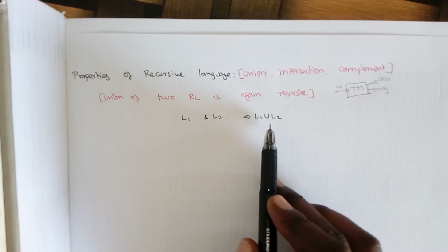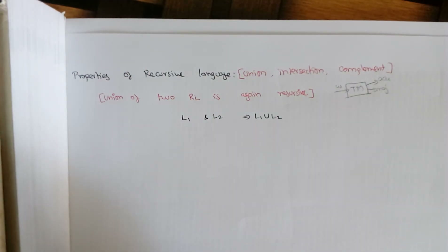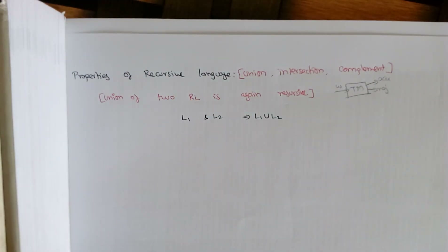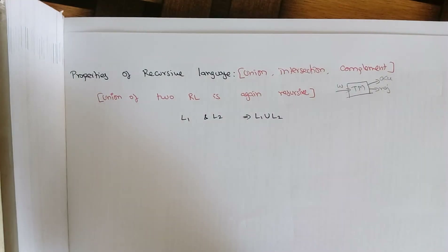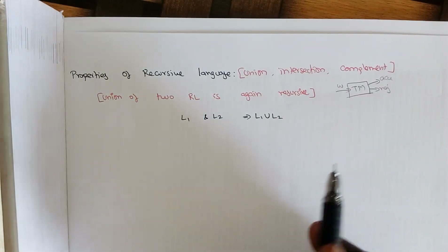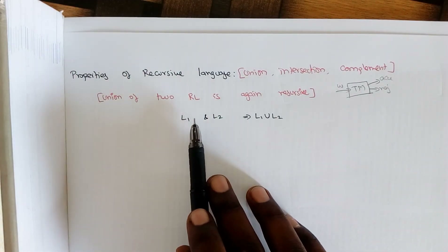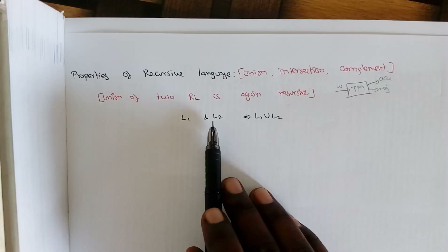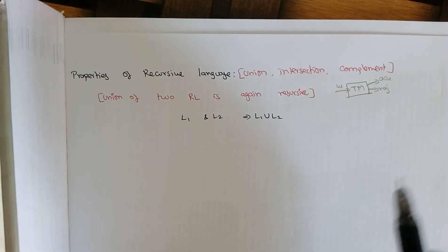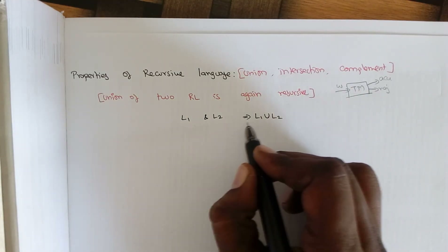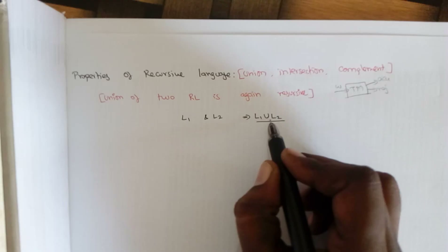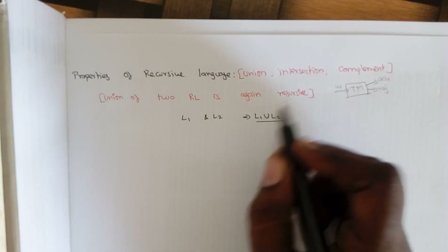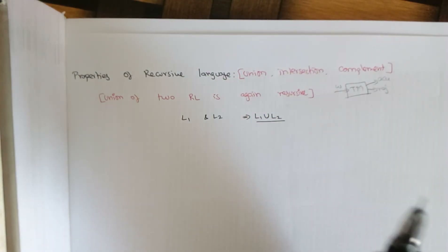L1 union L2 contains all strings that start with A, and when a string starts with B it should be a palindrome string. So it contains the combination — all languages accepted by L1 and L2. Our aim is to prove that L1 union L2 is also a recursive language.